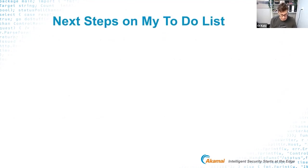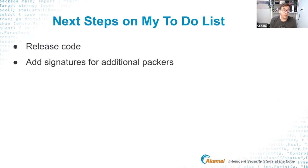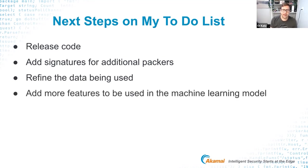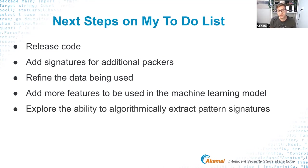Next steps: I'd like to release the code for this tool — currently in progress. I want to add more signatures for additional packers, refine the data sets — the phishing data set especially needs improvement. I'd like to add more features to the machine learning approach, and explore an algorithm to automatically extract structure-based signatures from packer files, since much of that work was done manually.